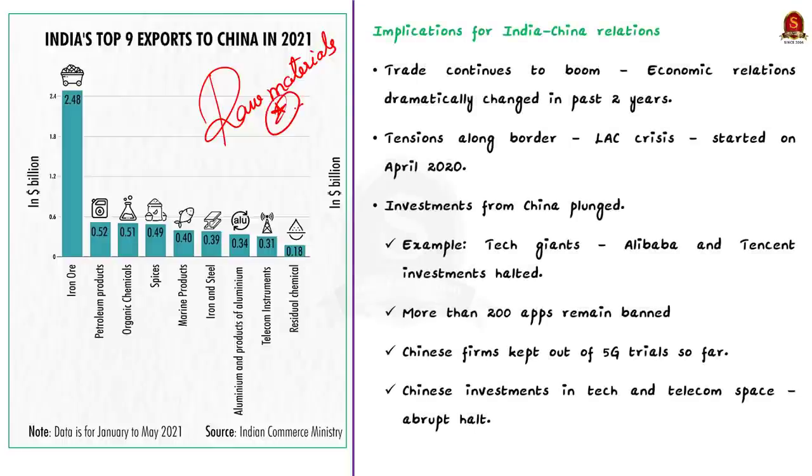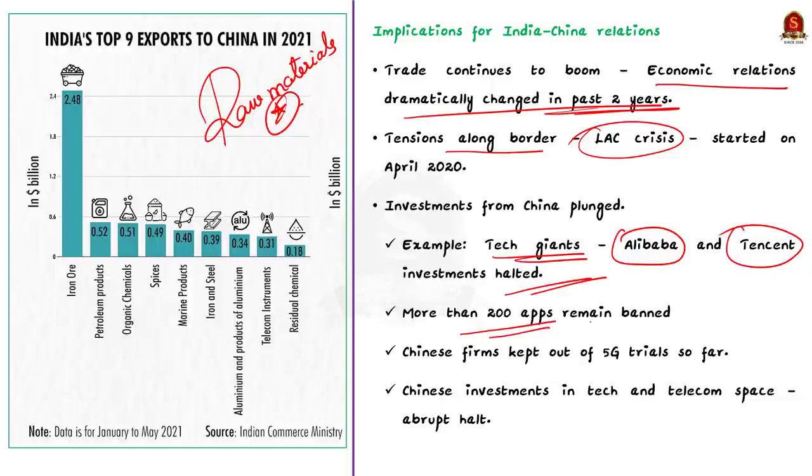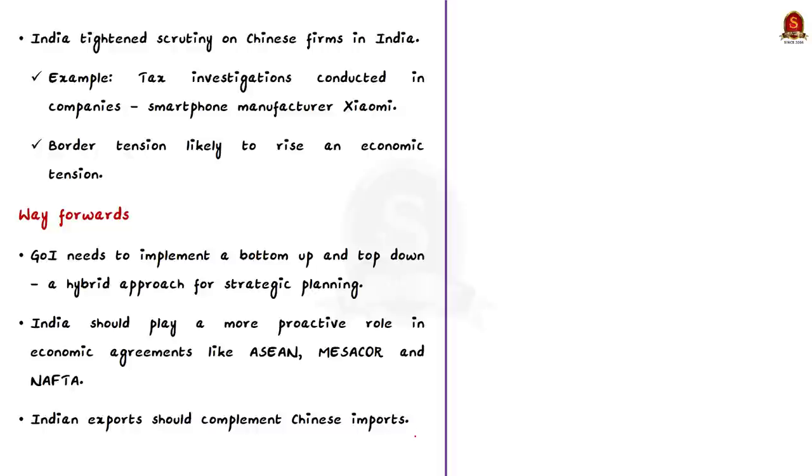So what are the implications for India and China relations? Though trade continues to boom, other aspects of economic relations have dramatically changed in the past two years. There were tensions along the border that is the LAC crisis which started on April 2020. For this, the message from the New Delhi was that it cannot be business as usual when there is such border tensions. Also note that investments from China has plunged. For example, investments from tech giants such as Alibaba and Tencent has come to an abrupt halt. More than 200 apps remain banned and Chinese firms are kept out of 5G trial phase. So Chinese investments in tech and telecom space which was once rapidly increasing came to an abrupt halt.